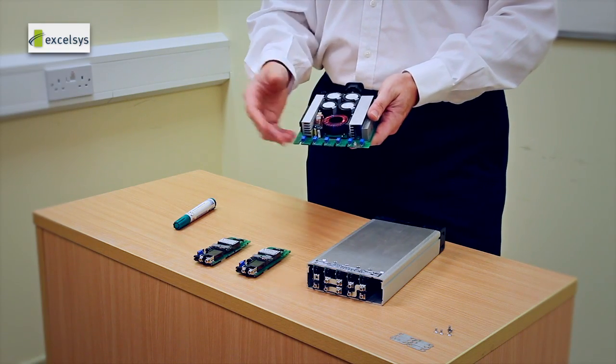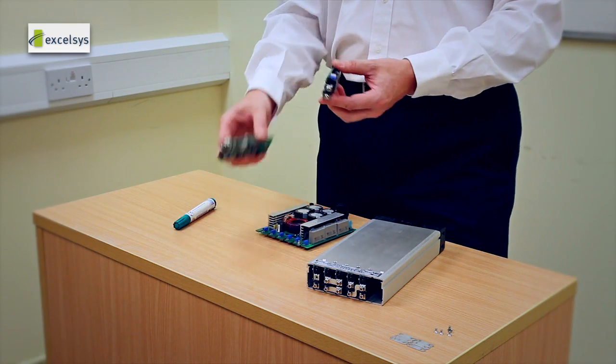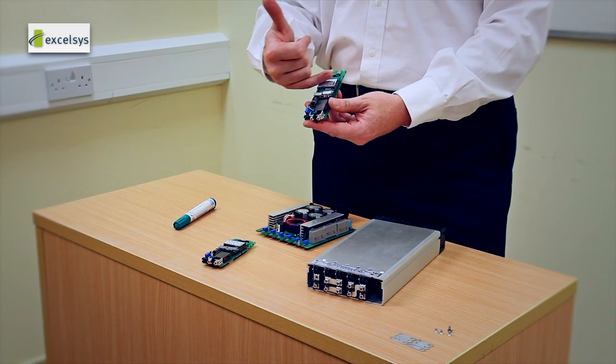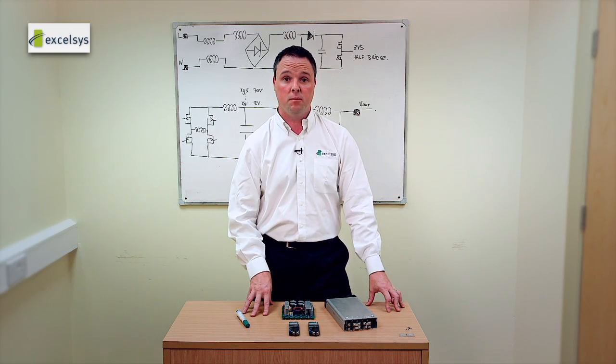You'll note here that it's broken up into two parts. We have the power mod, which is the front end, and we have the power packs, where the isolation barrier occurs across the main transformer. So each of these modules has an isolation barrier built on board.